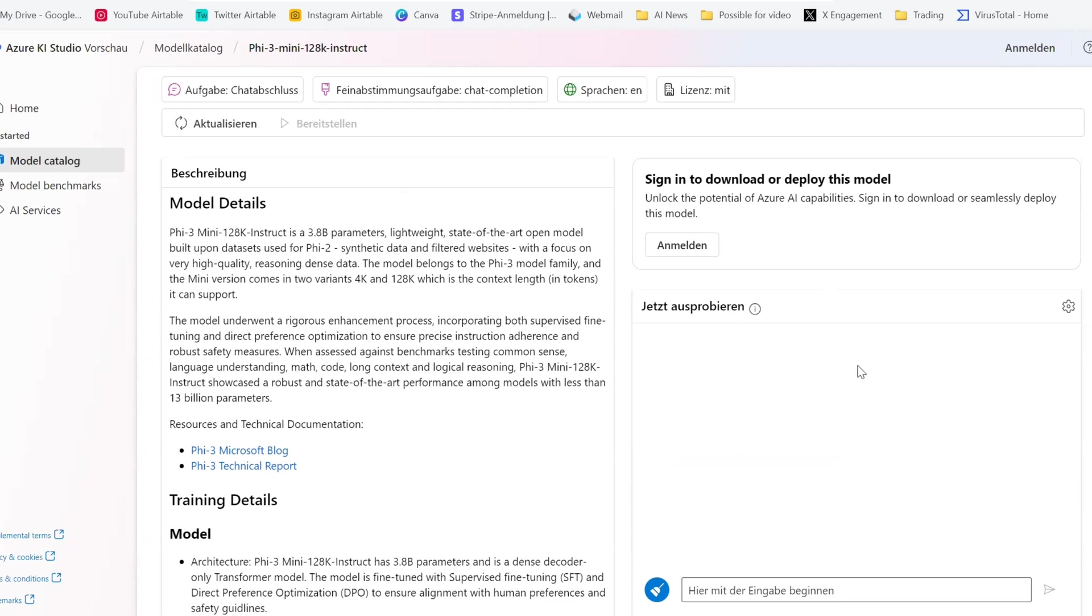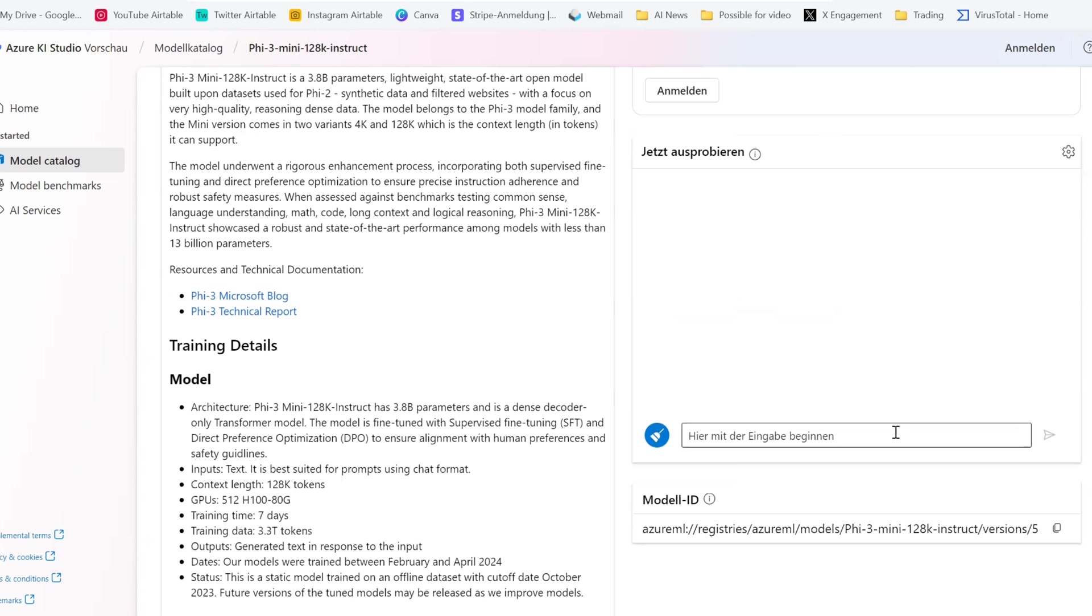All right, and here you can use Phi-3. And one of the most impressive things about this, I believe, is this 128,000 token context window, which is pretty cool. So let's just say, please summarize the seven habits of highly effective people by Stephen Covey for me.